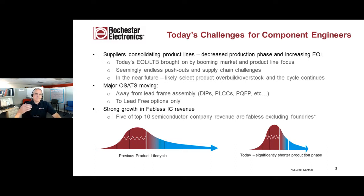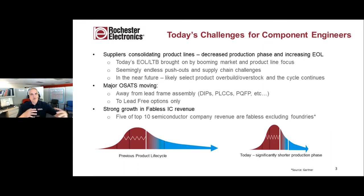There's also strong growth in fabless IC revenue. If you take a look at what used to be the integrated device manufacturers, or IDMs, they had their own fabs, and they would overbuild as something was coming toward an end, so there was a buffer at the last-time-buy. But for fabless companies, there isn't an overbuild situation — it's essentially built to order. More and more of the semiconductor market today is built to order, which means you're not going to have parts that just magically happen to be around in the market.